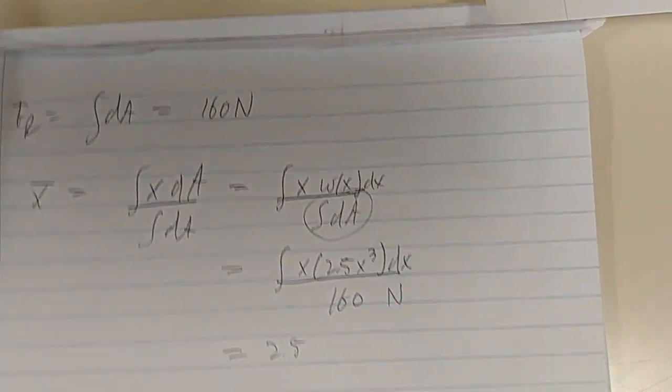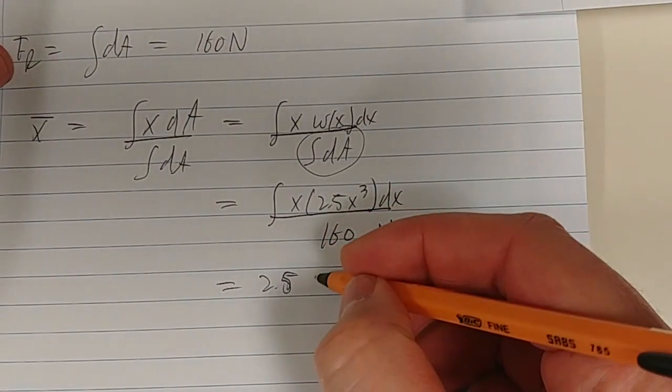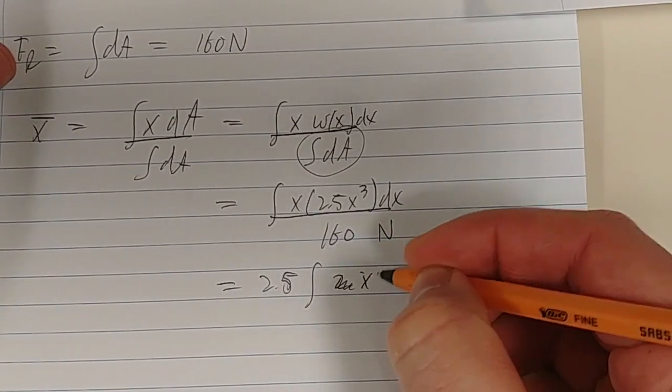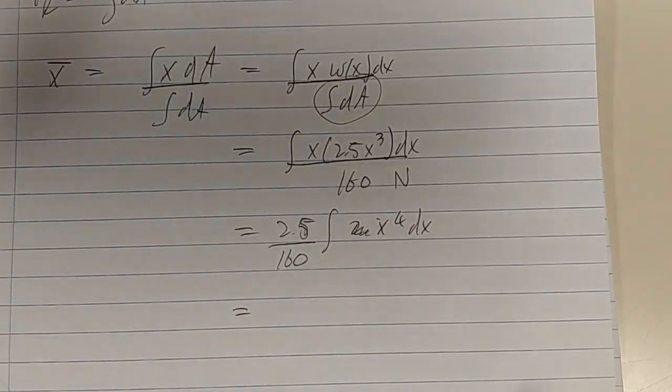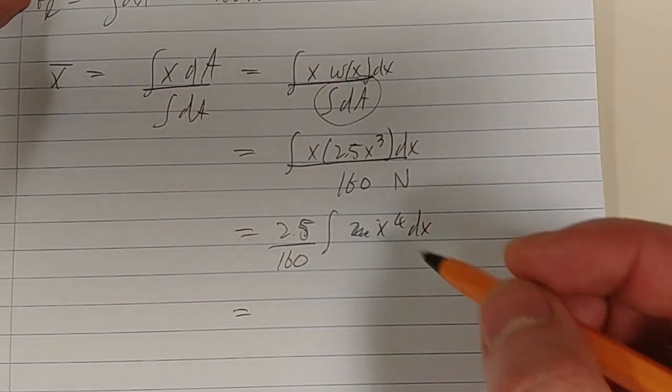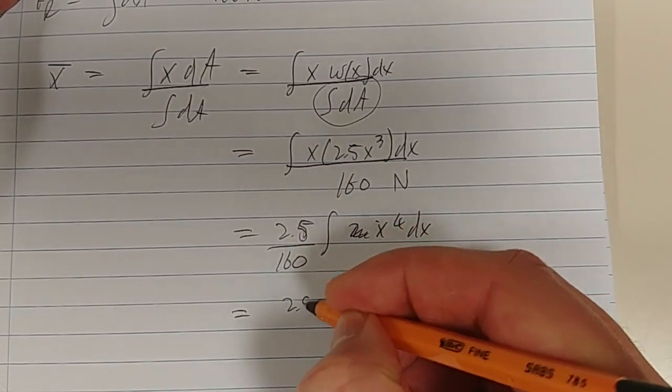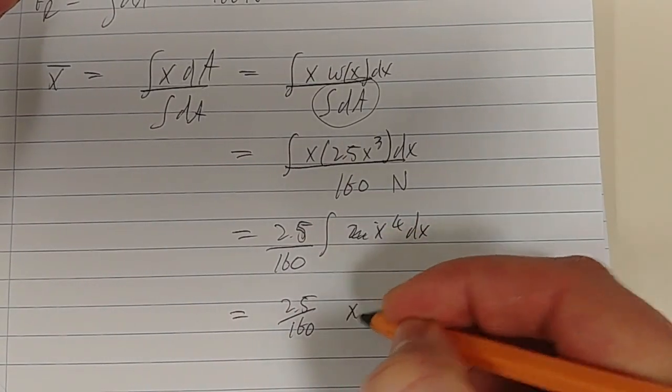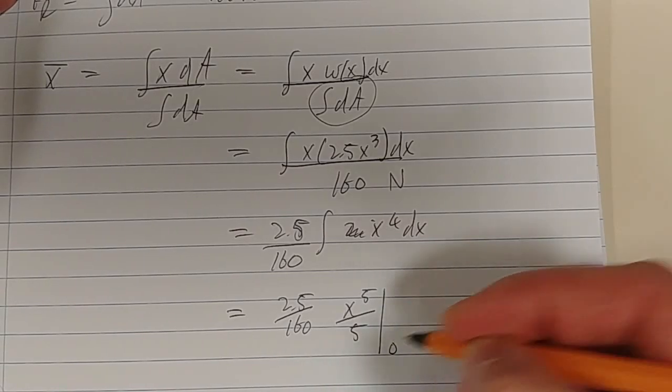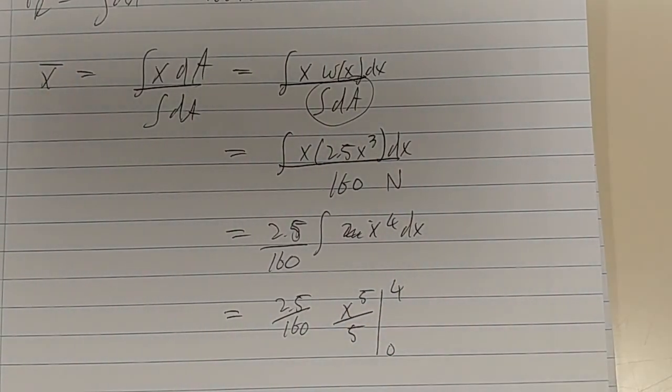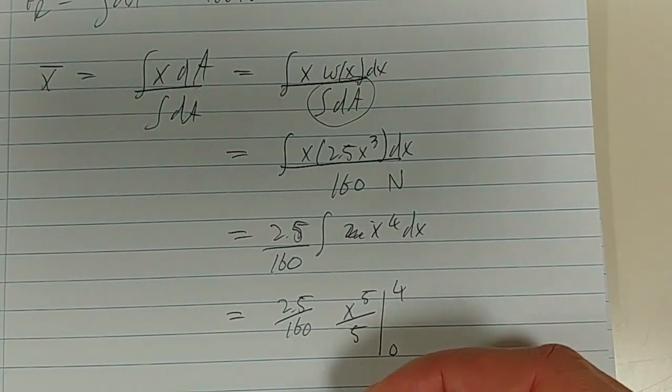We can bring that 2.5 out, and we have ∫x⁴dx, that's over 160. We've still got this 2.5 over 160. This then becomes x⁵/5, if I'm not mistaken, again it's between 0 and 4. So x⁵, 4 to the power of 5, divided by 5 times 2.5 divided by 160 gives us 3.2 meters.